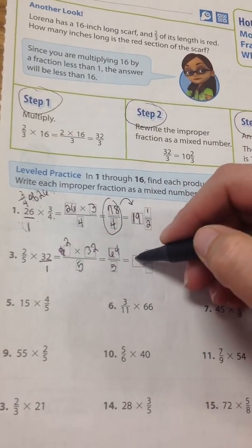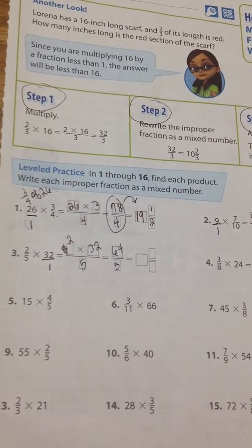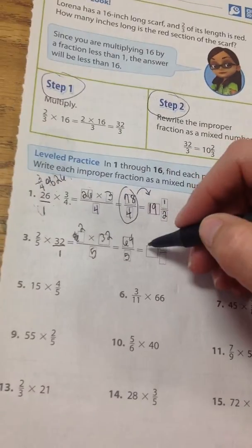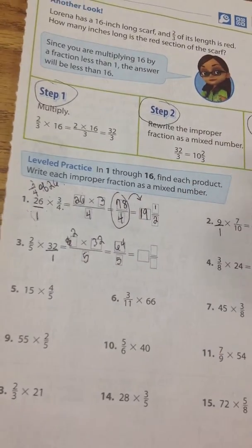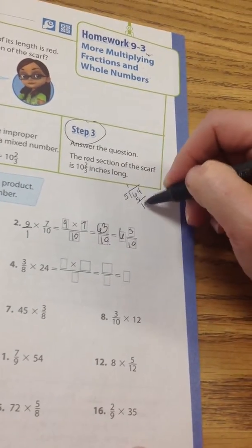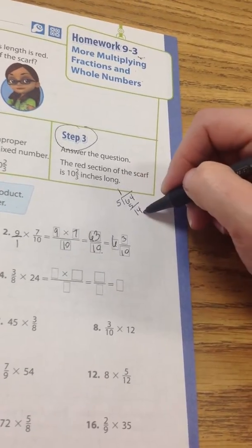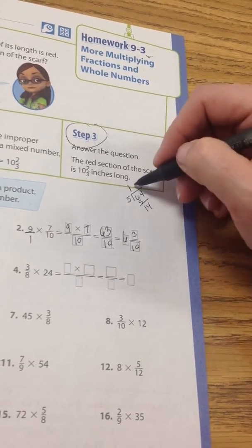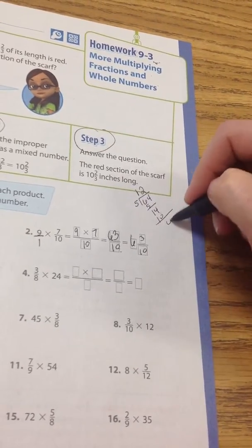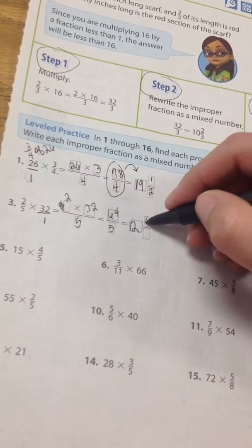So that is going to be 64 divided by 5. I'm going to probably have to do some side math here because I'm not exactly sure what the fraction is. Let's see, 5 goes into 14 two times, and that is going to be 4. So it's going to be 12 and 4 fifths. And the last one,